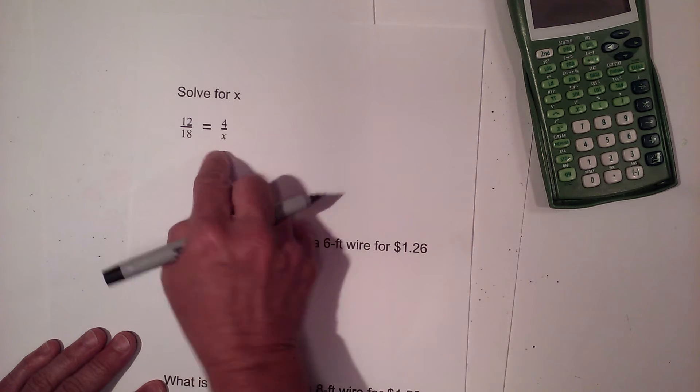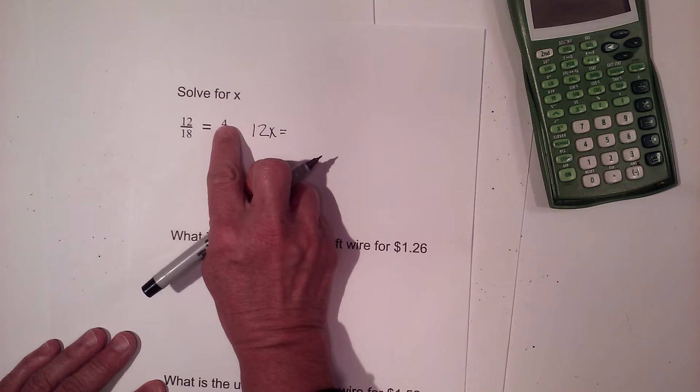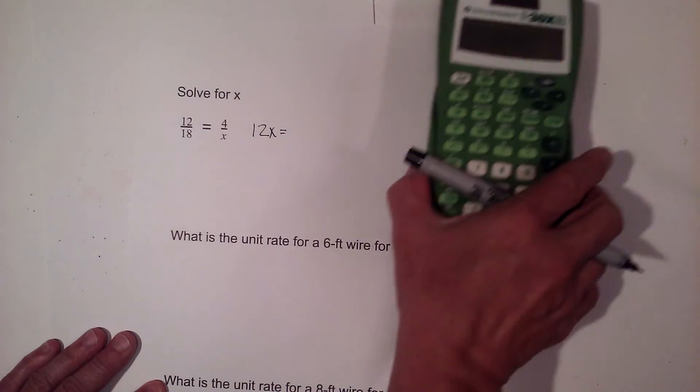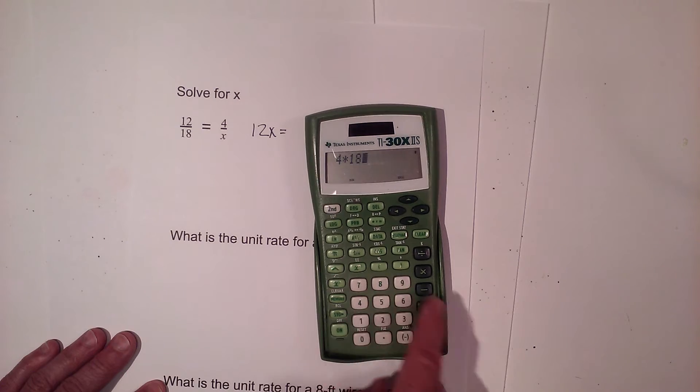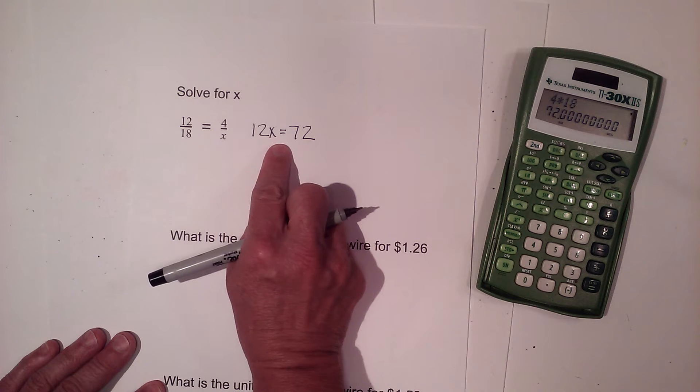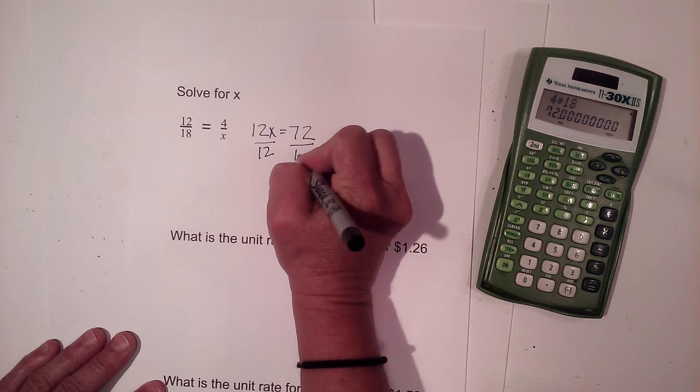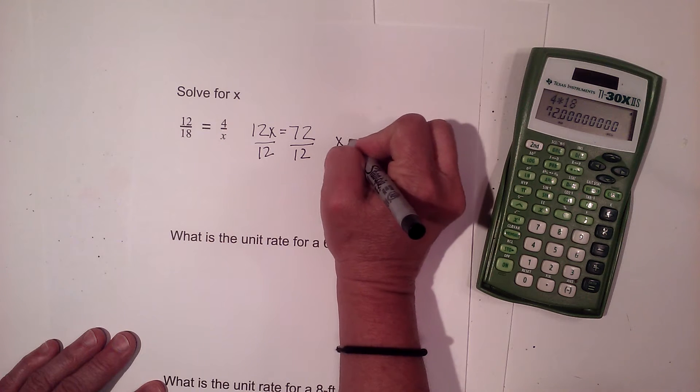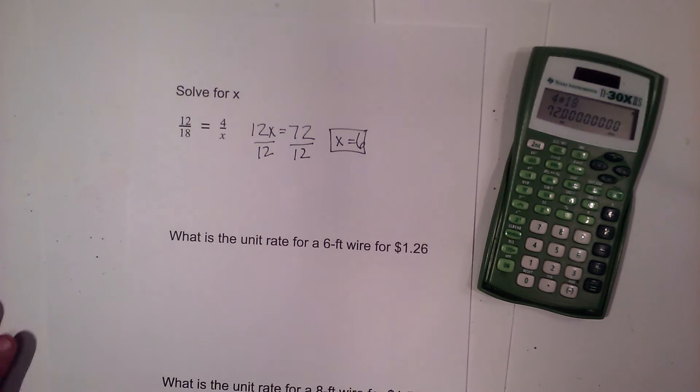So I can take 12 times x, which becomes 12x, and 4 times 18, which is 72. And then I've got 12x equals 72. I can divide both sides by 12. So x is equal to 6. That's one method.